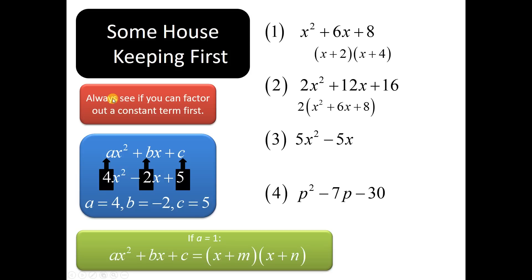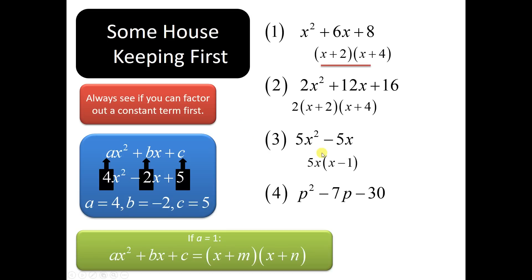Now let's take a look at the second one. Remember, you always want to see if there's a common factor you can take out. And here there's a 2, so we're going to take out the 2. We just found that x squared plus 6x plus 8 equals x plus 2 times x plus 4, so this is going to be 2 times x plus 2 times x plus 4. The next one, all you can do is take out a common multiple of 5x. I threw this in because students forget about this as soon as they start trying to figure out how to factor. So you can't ever forget — always look to see if you can take out a common factor first.